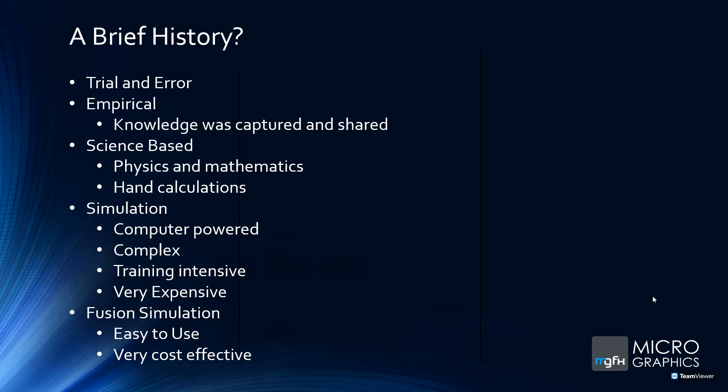The human brain can only calculate so much, so we moved on to computers. Early simulation software was computer-powered, but computers were huge — filling an entire room — and very expensive. These simulation packages were also very complex, similar to MS-DOS, where you'd have to type everything out rather than use a point-and-click interface. Very training-intensive and very expensive.